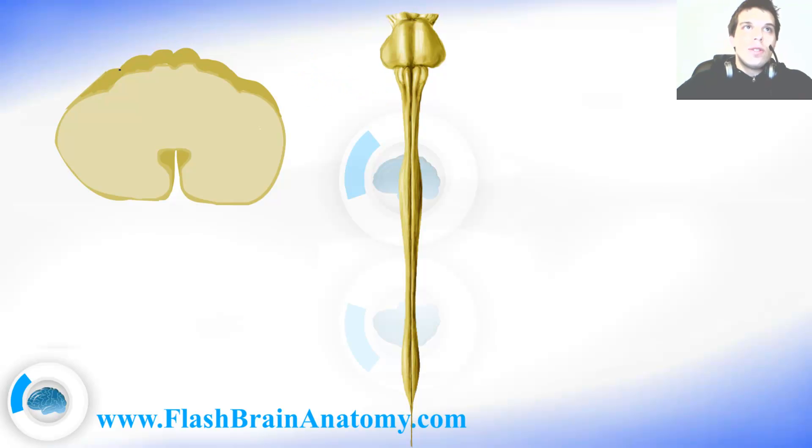The posterolateral sulcus, the sulcus over here, is very important because I said that the posterior roots for the spinal nerves leave here. So they come from here and they join the anterior roots and they create the spinal nerve.